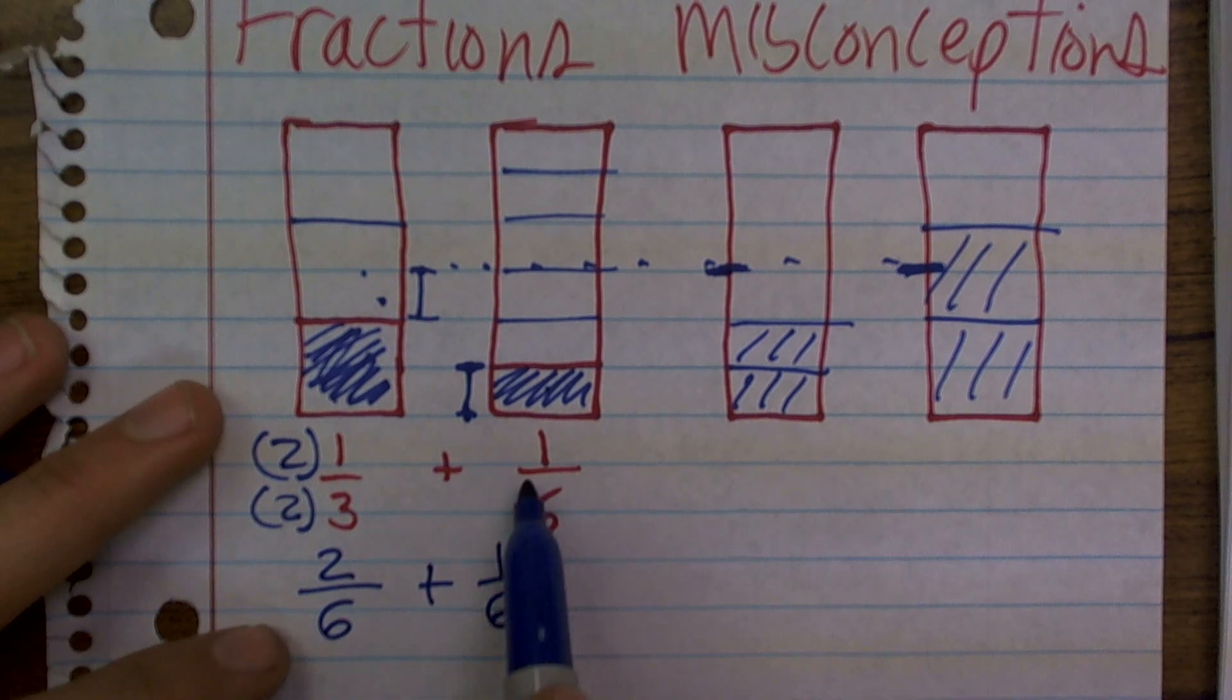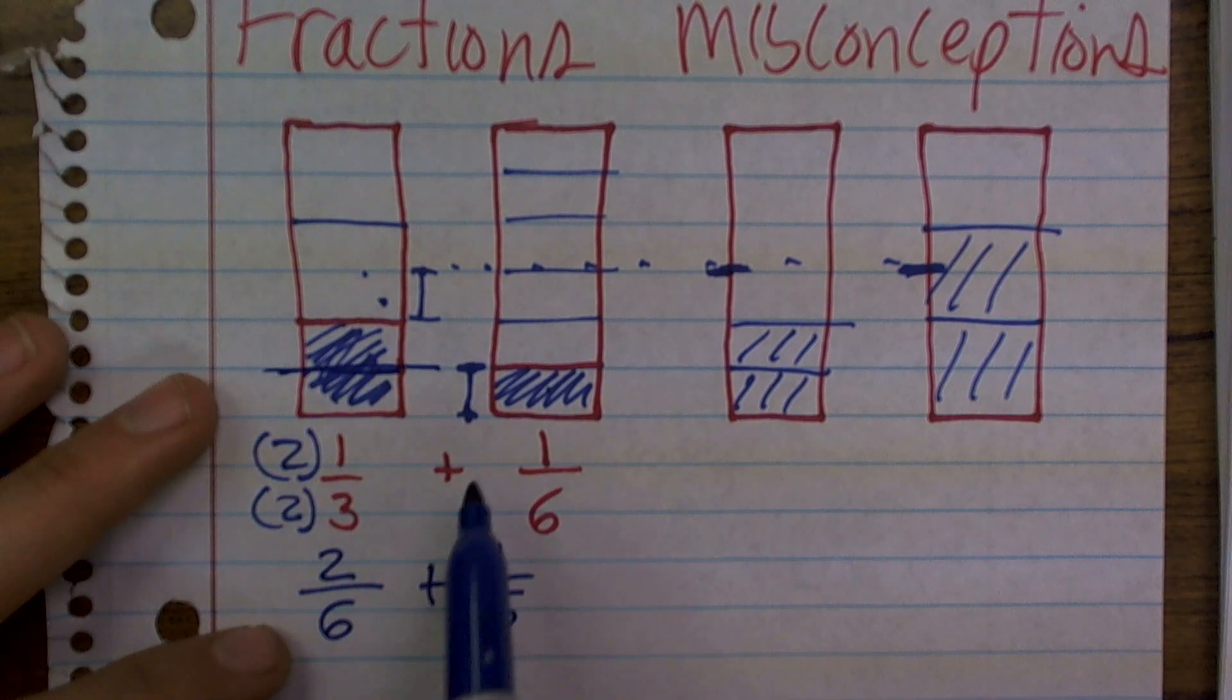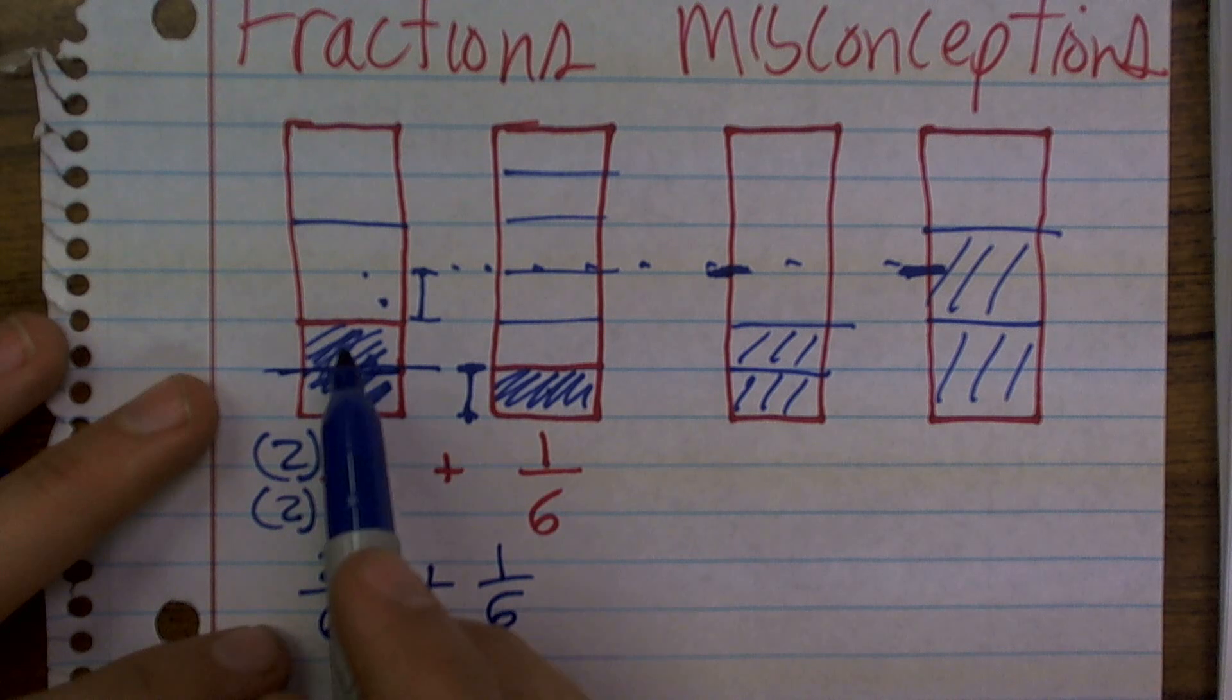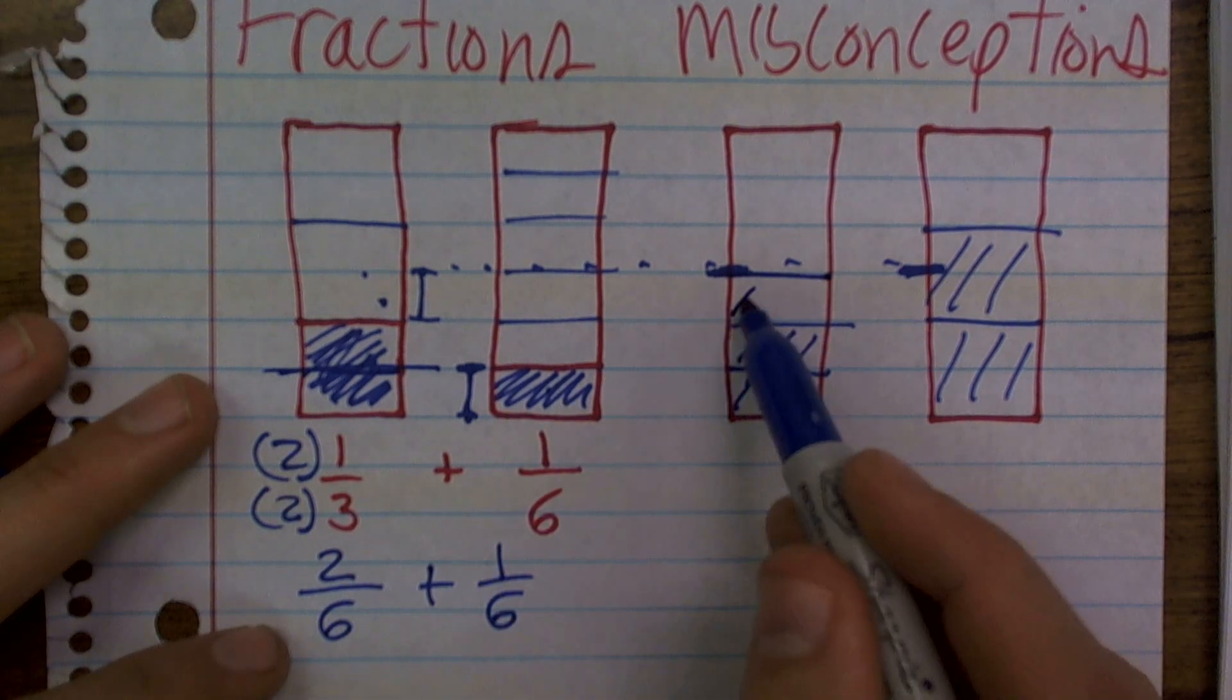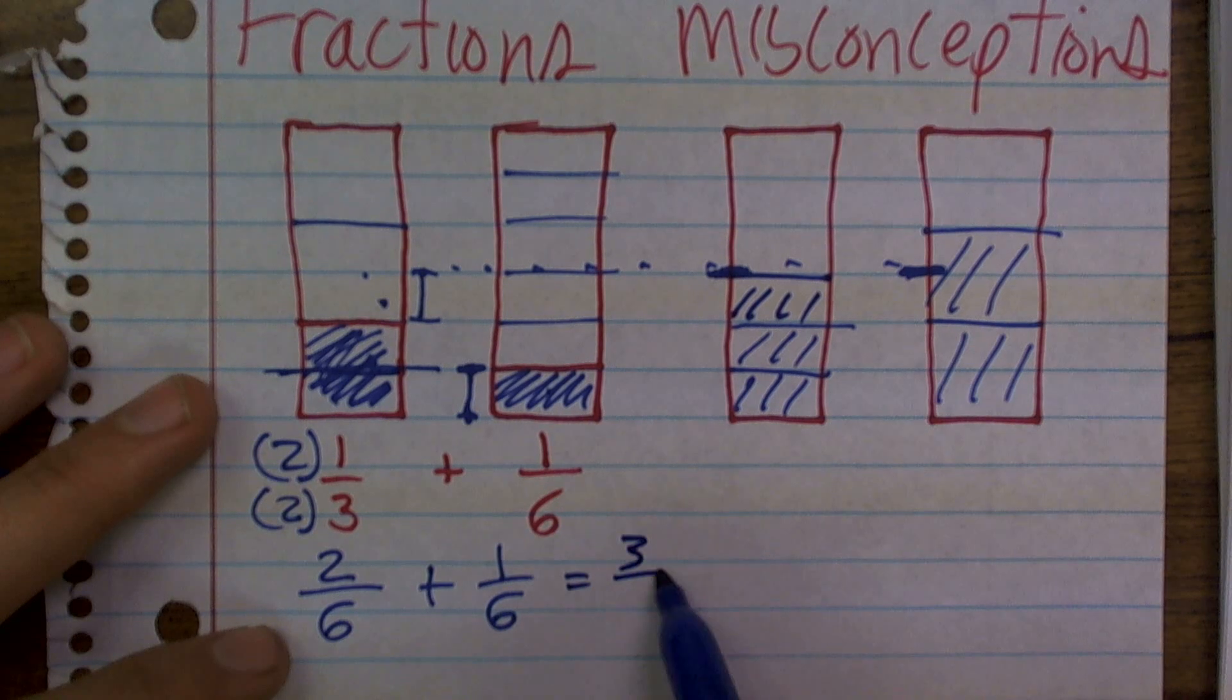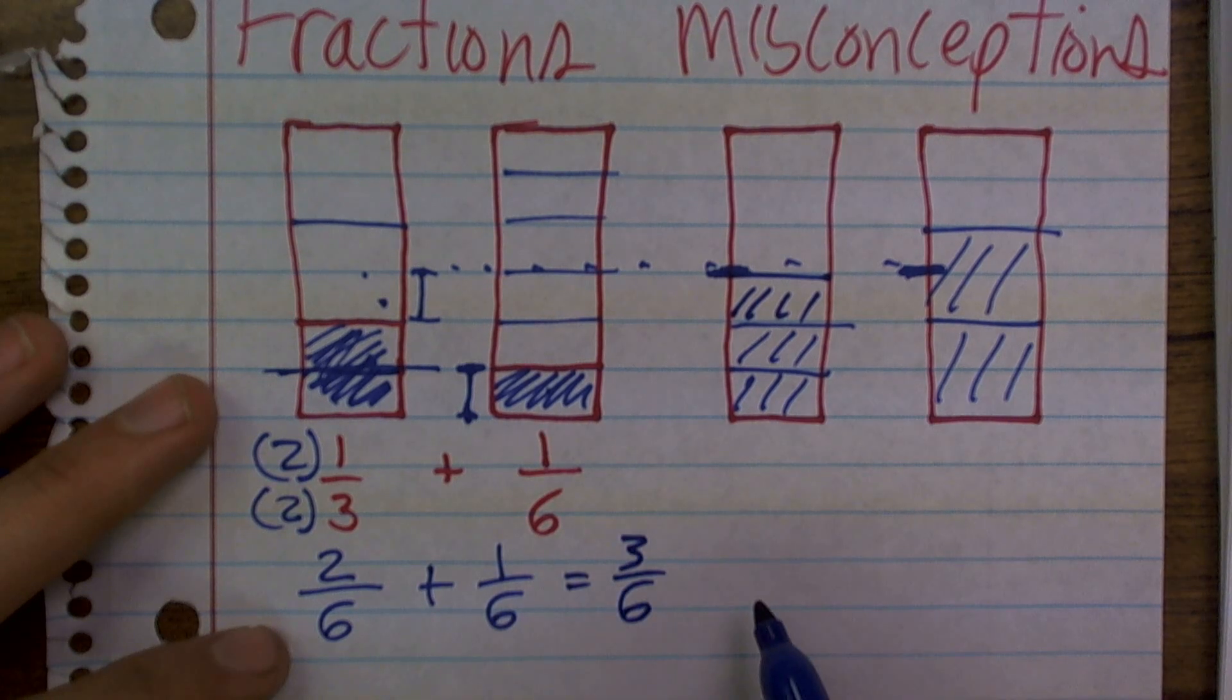and now what I have is two-thirds, which is actually, I'm sorry, two-sixths, which is one-two, plus one-sixth, equals three-sixths.